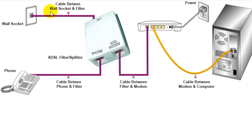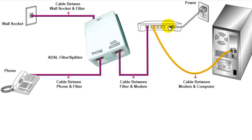In this diagram you can see what equipment we need. This is a DSL filter, also called a splitter. This is the modem, and some modems also contain routers — that is, wireless routers. You also need a power switch to power the modem, a computer, and optionally an ethernet cable, because if the modem provides Wi-Fi you can connect wirelessly.